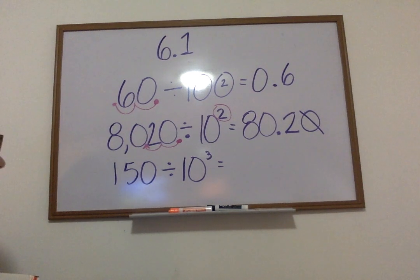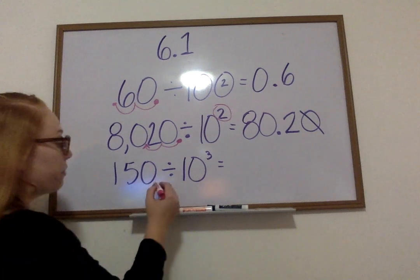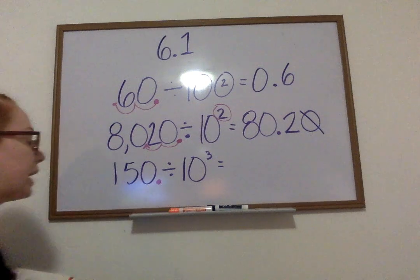It's hiding. I have an imaginary decimal. My imaginary decimal is always at the back of my number, right here. That's where they're hiding at.